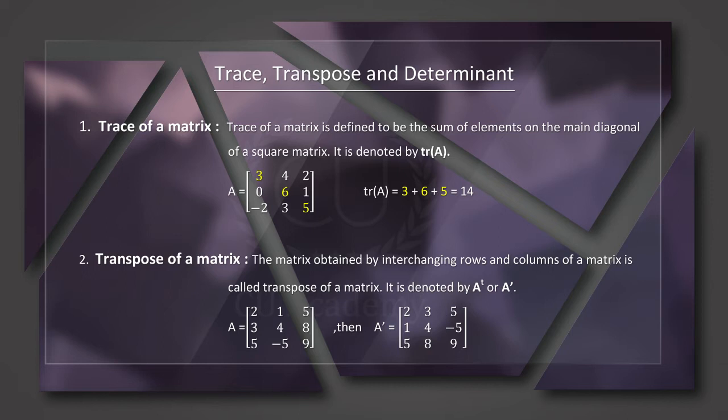The trace of A: the diagonal elements are equal to 3 plus 6 plus 5, which is equal to 14.